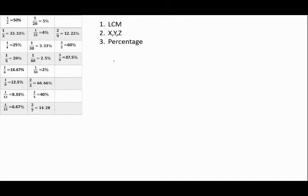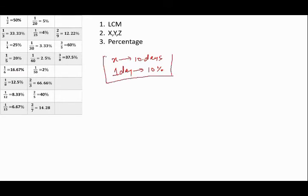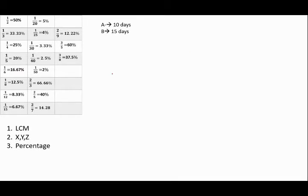When we say x can do a work in 10 days, it simply means that in one day he can do 10% of the work. This one-line logic is enough to solve almost 95% of your time and work problems. I'm saying 95% because there is an exception to this particular method, which we will come to later on. Further, we will be discussing some basic questions before moving on to intermediate level questions, and then we will try the actual higher difficulty level problems.